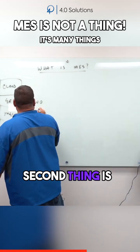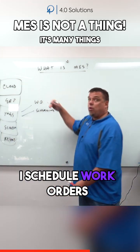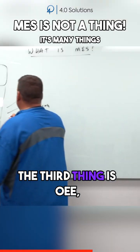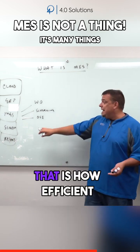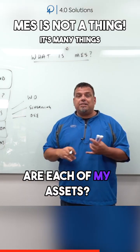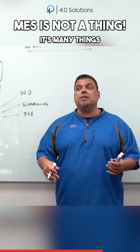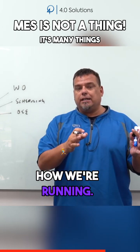The second thing is scheduling — I schedule work orders to be run. The third thing is OEE, Overall Equipment Effectiveness: how efficient are each of my assets, how efficient are my areas? It helps me understand how we're running.